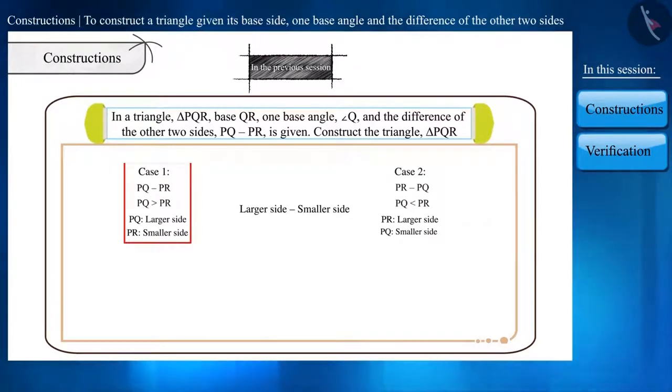Case 1, when the side formed from the base angle is larger than the other side. And Case 2, when the side formed from the base angle is smaller than the other side. In the previous video, we understood the construction according to Case 1.